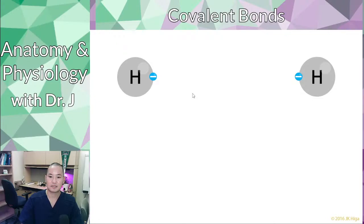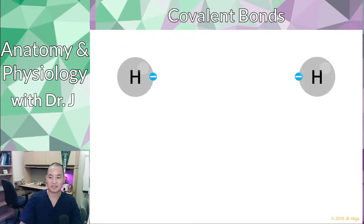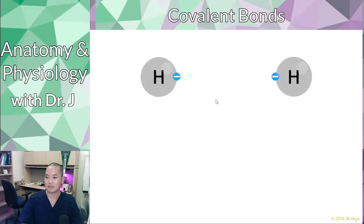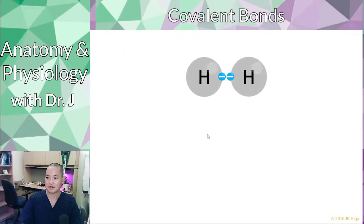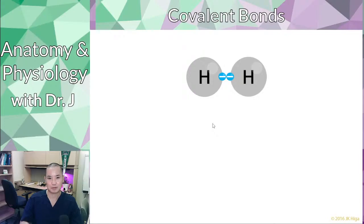With covalent bonds, compared to one atom ripping off or transferring one electron to another atom, two atoms actually share a pair of electrons. Here we have a single covalent bond between two hydrogen atoms. The thing about electrons is that they don't like to be alone. If you want more detail, you can read about valence shells.